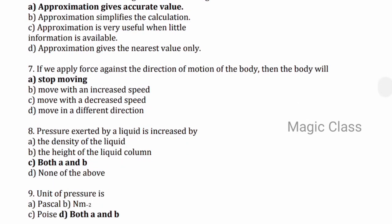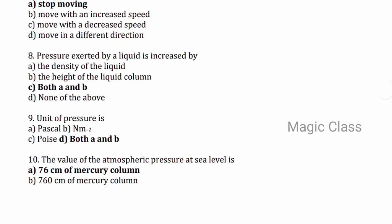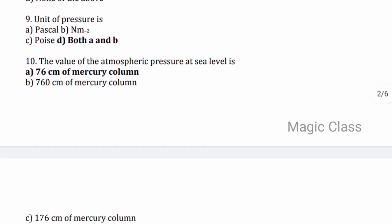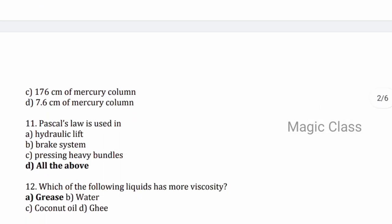Question 7 — if we apply force against the direction of motion of the body, then the body will stop moving. Question 8 — pressure exerted by a liquid is increased by both A and B: the density of the liquid and the height of the liquid column. Question 9 — unit of pressure is both A and B: Pascal and Newton metre power minus 2. Question 10 — the value of atmospheric pressure at sea level is 76 cm of mercury column.